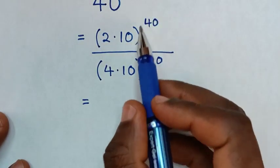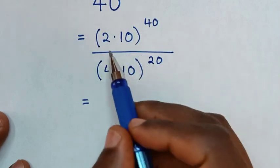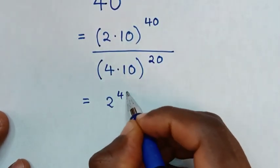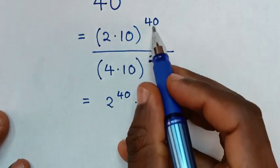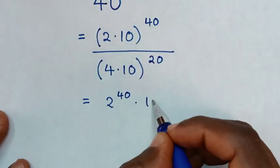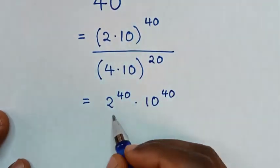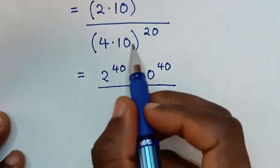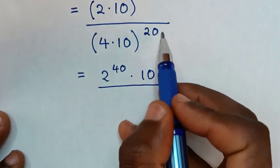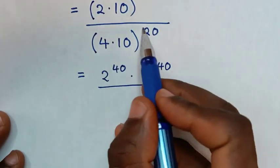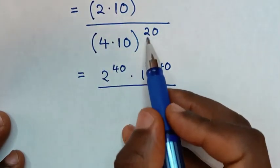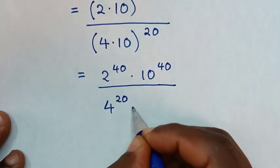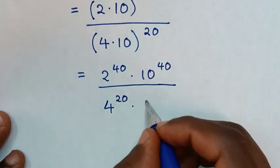We take the power of 40 inside the bracket, so it will be 2 power of 40, then times 10 power of 40. Over — also in the denominator, we take the power of 20 inside the bracket, so it will be 4 power of 20, then times 10 power of 20.